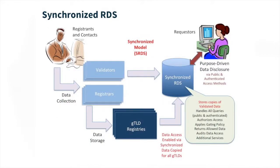On the next slide we put up the synchronized model. There are some complexities to it, but it's well laid out. Following the flow: domain name data is collected by the registrars and/or the validators. A validator can be a registrar or a third party. The validator stores the contact data and then pushes that to the RDS. The registrars simultaneously push the domain name data and the contact IDs to the registries, which is then pushed to the RDS.